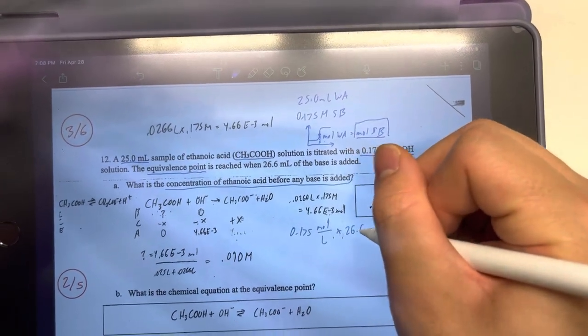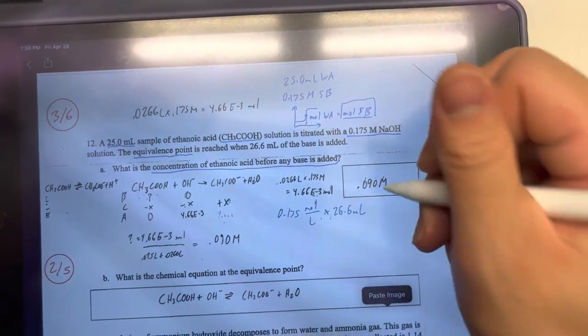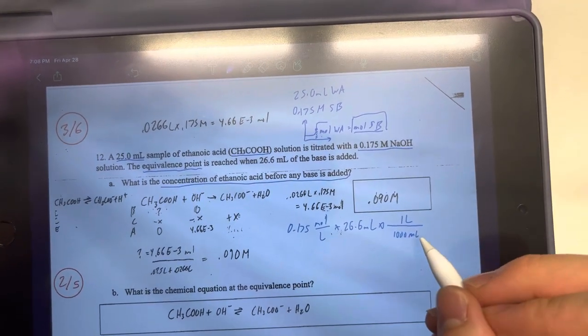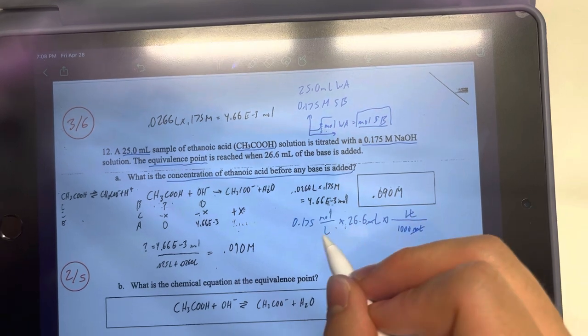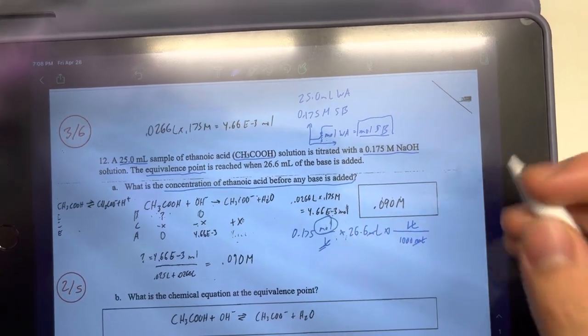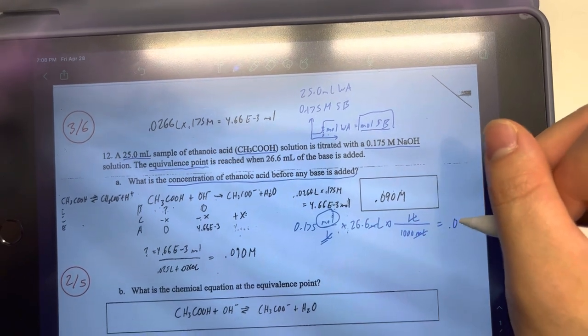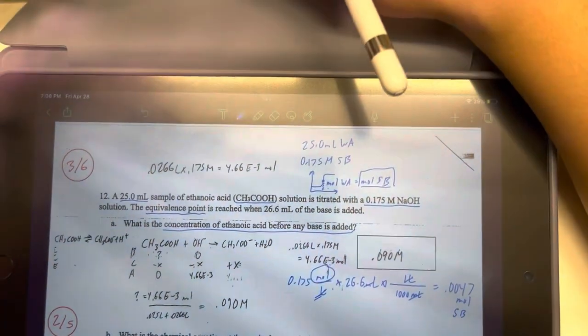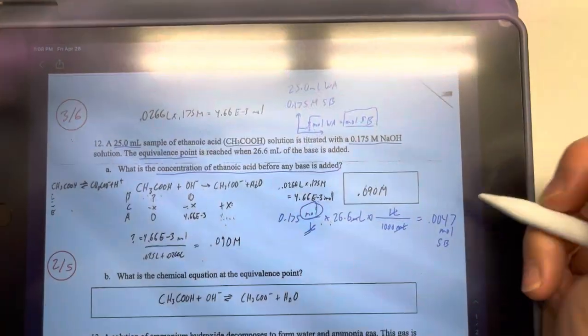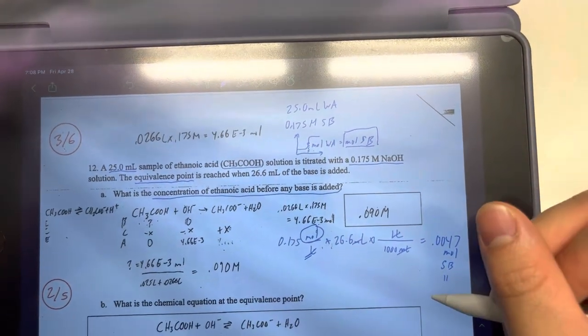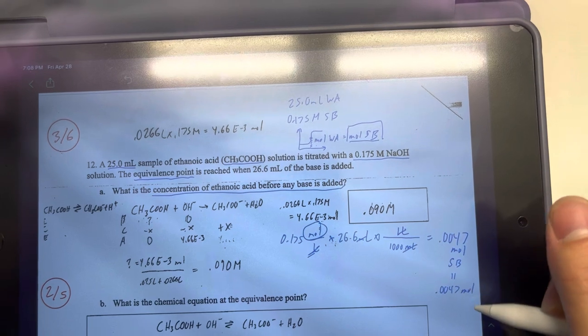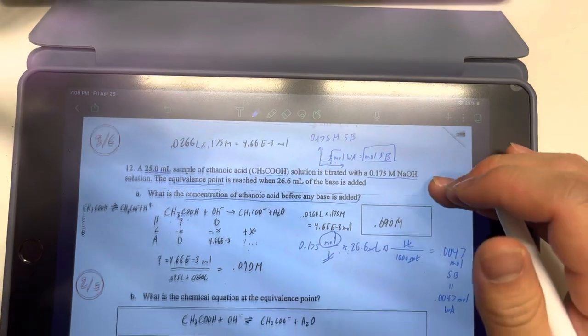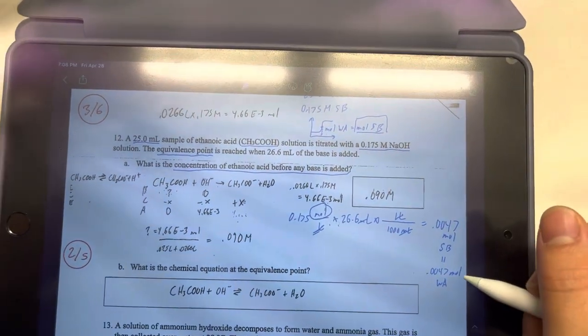So molars is moles over liters. And then we have the volume. And in order to convert this to liters, we just do dimensional analysis. And then we can start crossing our units to make sure everything works out. And it does. We are only left with moles on top here. And that will give us 0.0047 moles of strong base. And as we stated before, we then know that we have 0.0047 moles of weak acid.